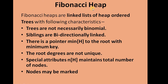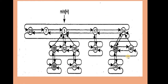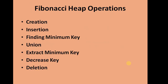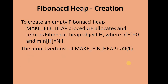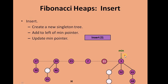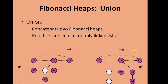In the previous lesson we had seen the definition of the Fibonacci Heap, how it is represented, what mechanisms are used — represented through a doubly linked list — and what are the advantages of using a circular doubly linked list in Fibonacci Heap. We had also seen how the heap is created, how a node can be inserted, and the running time of those operations.